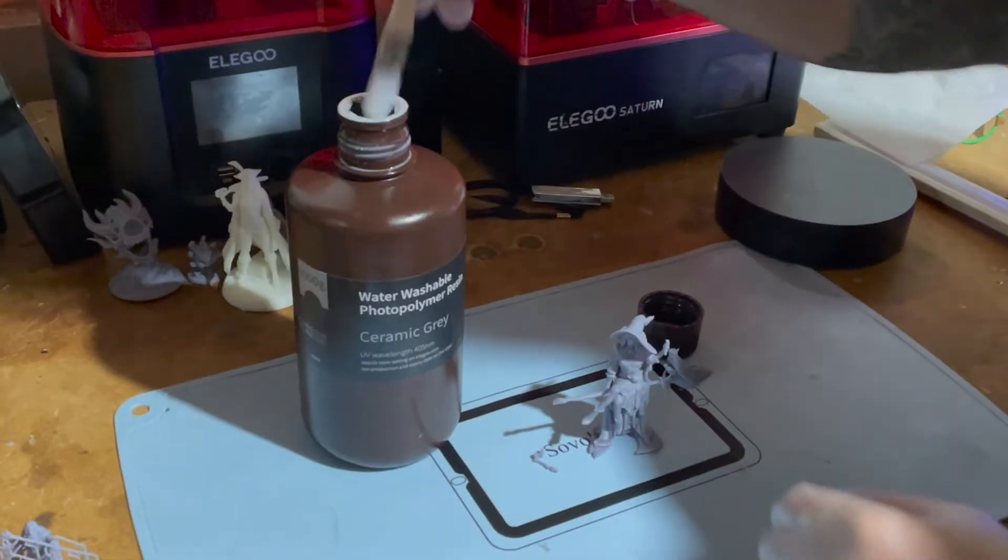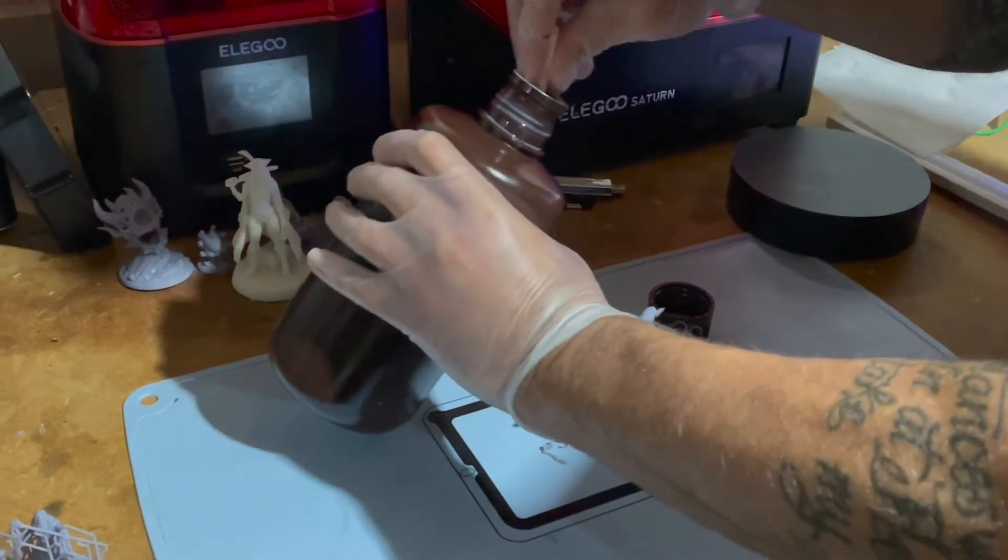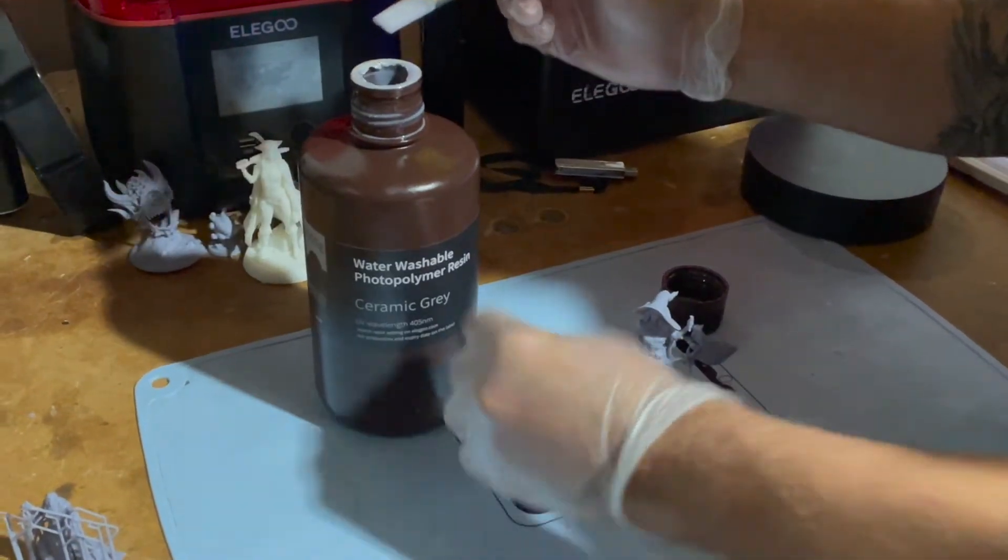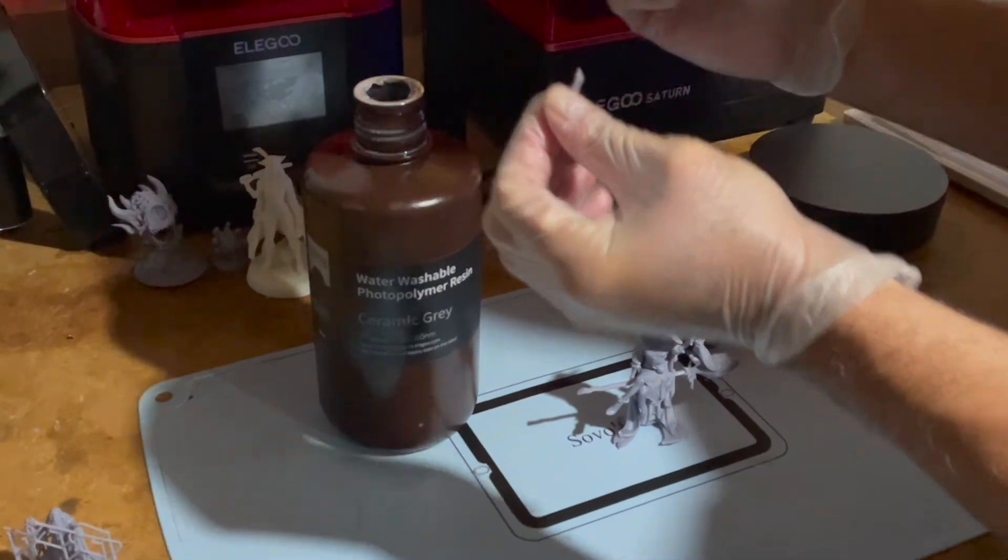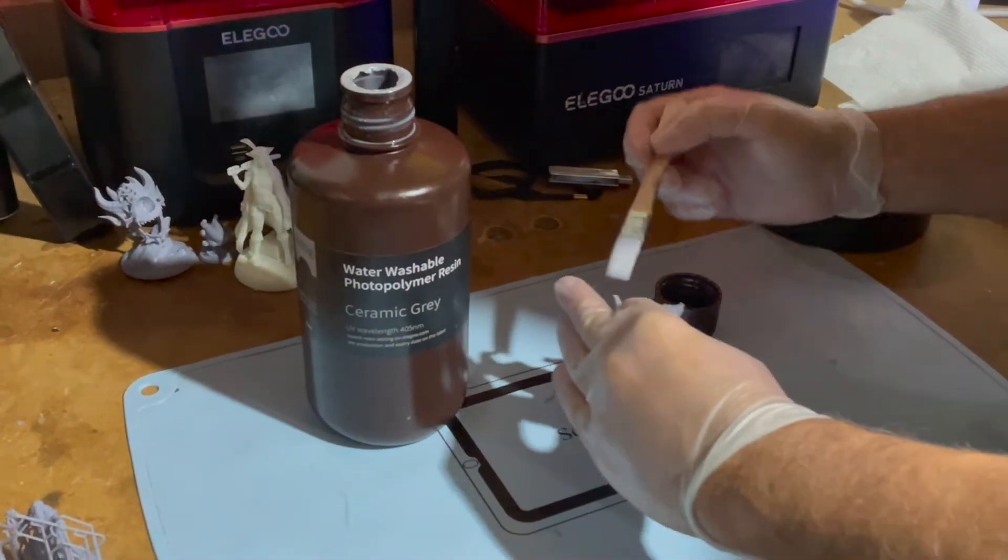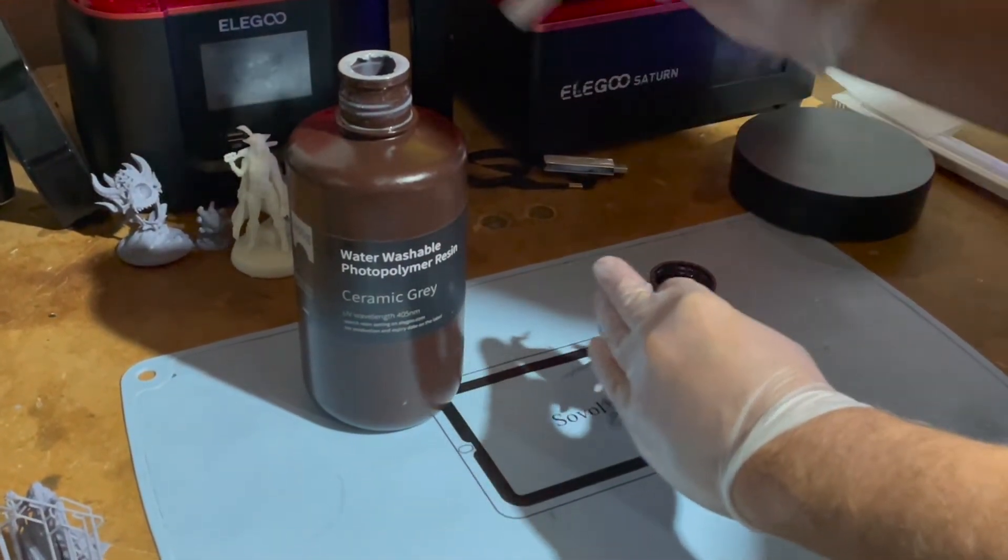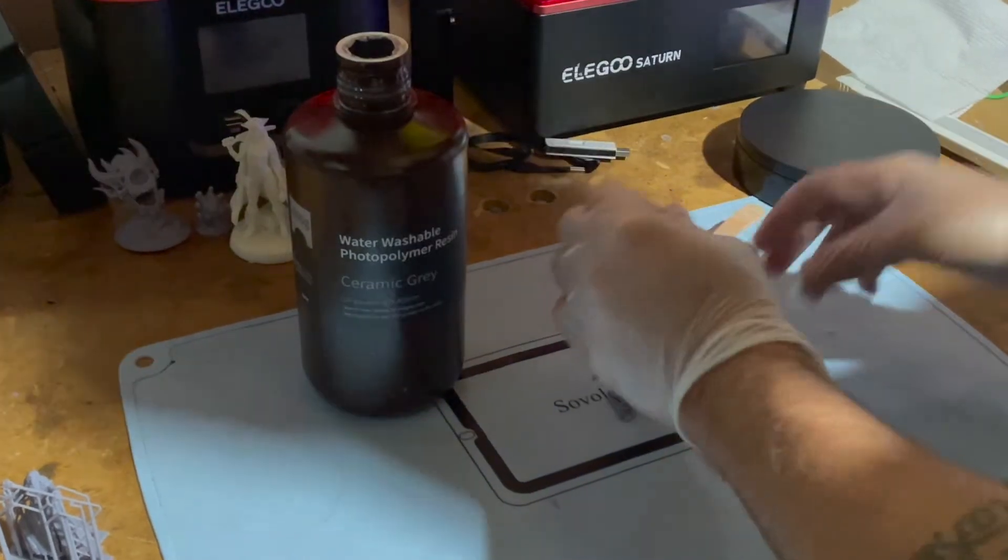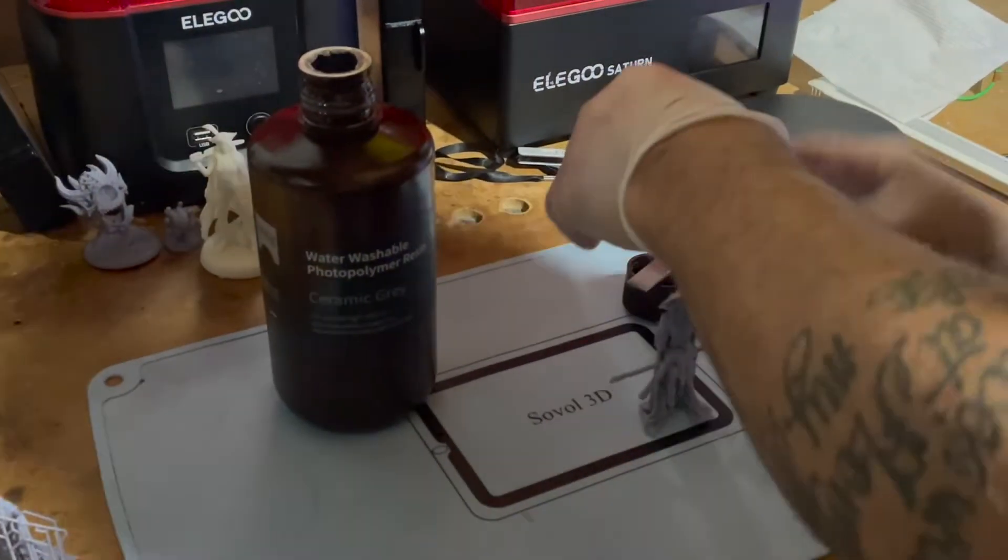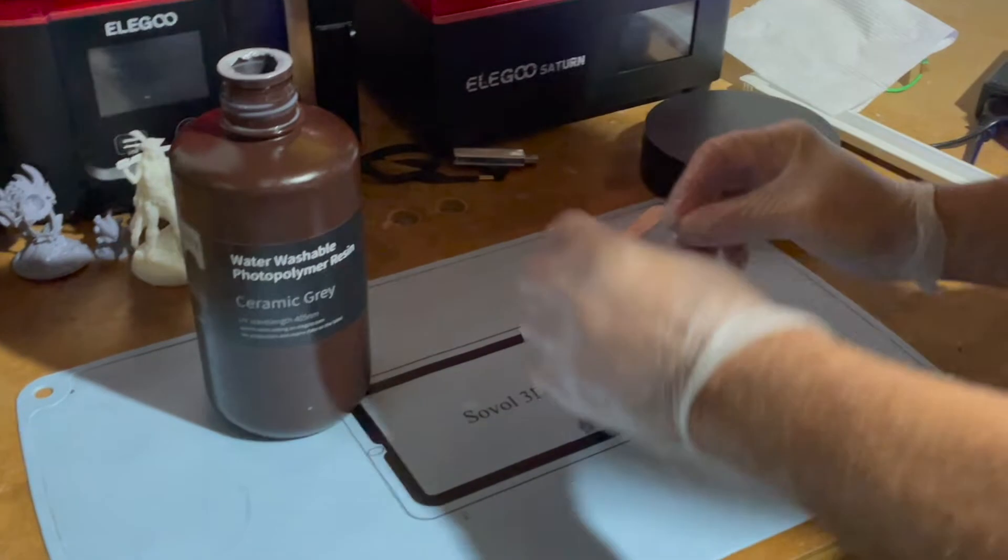So what we're going to do is we're going to take a little resin. We're going to apply it to the broken part. And then what we're going to do is we're going to hold it together and use a UV light to harden the resin together.